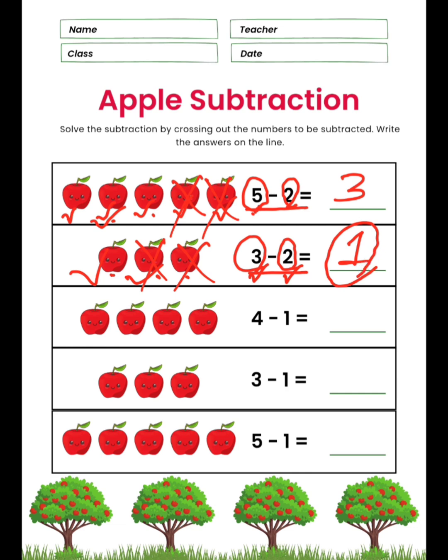Now 4 minus 1. How many apples are there? 1, 2, 3, and 4. The first one is 4. We are going to cross out 1 apple. After crossing out 1 apple, how many left? 1, 2, 3. Very good!